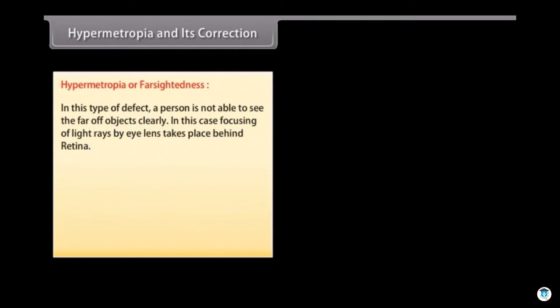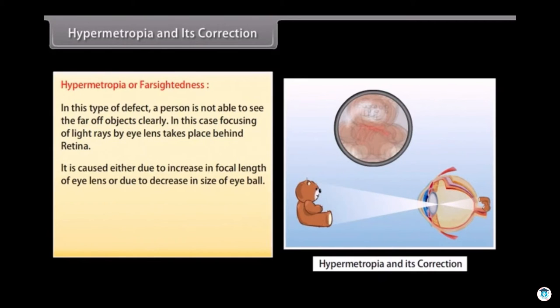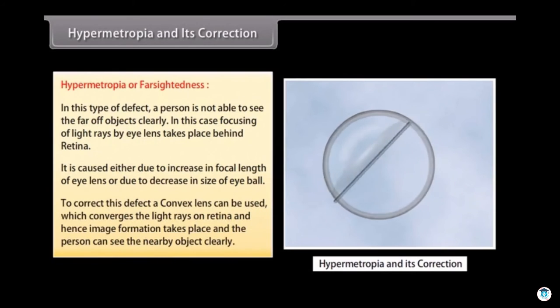Hypermetropia: In this type of defect, a person is not able to see the far-off objects clearly. Focusing of light rays by eye lens takes place behind retina. It is caused either due to increase in focal length of eye lens or due to decrease in size of eyeball. To correct this defect, a convex lens can be used which converges the light rays on retina and hence image formation takes place and the person can see the nearby object clearly.